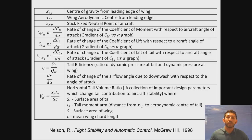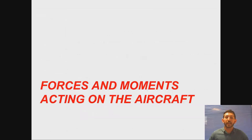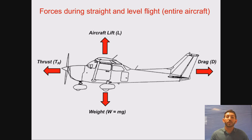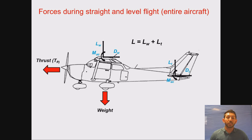During the enroute or cruise phase of flight, the forces and moments acting on the aircraft can be primarily represented as thrust, drag, lift, and weight. During straight and level flight, when there are no accelerations, thrust should equal drag, and aircraft lift should equal its weight.